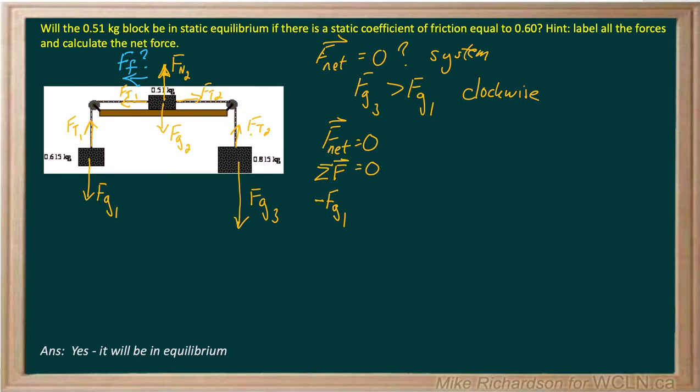Same with these tensions, they're going to cancel. This Fg3 is trying to drive the system clockwise. So we're saying this one is positive. And then the only thing left is our friction. And it's opposing the motion as friction does, which is negative. So there's our system. Let's see if we can figure out what friction has to be to prevent it from moving. What's the minimum amount of friction to keep this thing from moving?